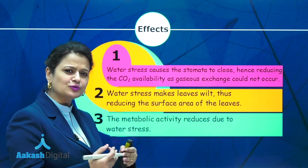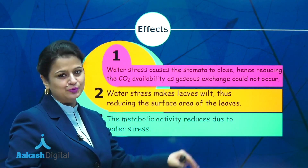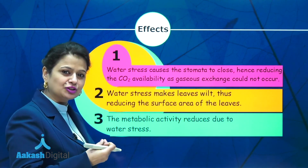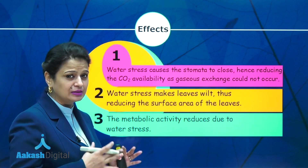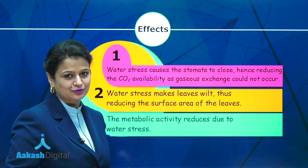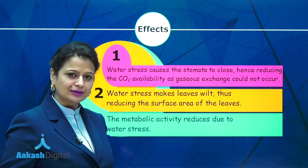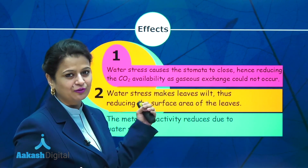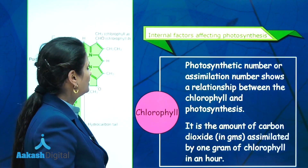Under water stress conditions, leaves will wilt. This will reduce the surface area available for light absorption, which is also going to affect photosynthesis. Additionally, water is very essential for controlling metabolic activities in the plant, and metabolic activity reduces under water stress. So water affects photosynthesis in three ways: one, by closing the stomata; two, by reducing the surface area of the leaf for light absorption due to wilting; and three, by reducing metabolic activity.